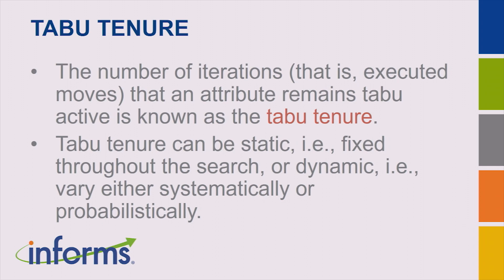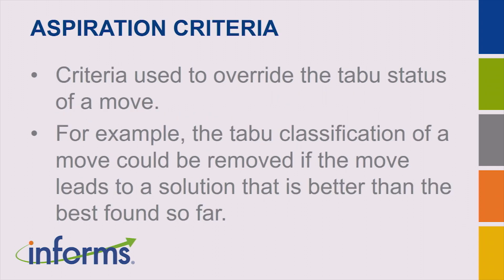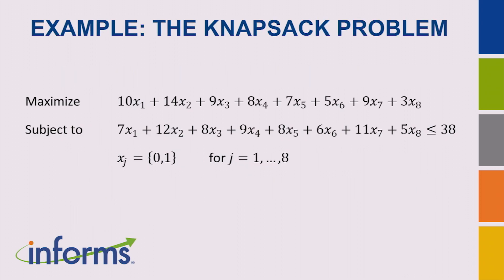The aspiration criterion is a required element of any tabu search. The typical one: if a move is tabu but making it leads to a solution better than anything encountered during the search, it would be unwise not to make it. So you can override the tabu status under those circumstances — that's probably the clearest aspiration criterion of all.